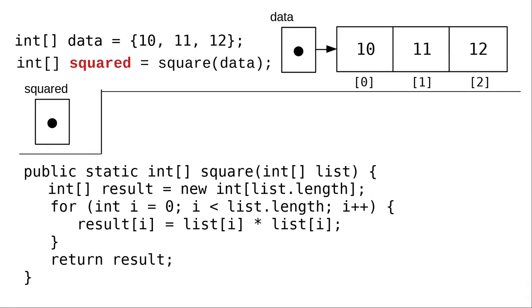In the second line, we declare a variable named squared, which will become the result of calling method square with data as the argument.